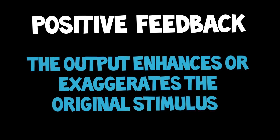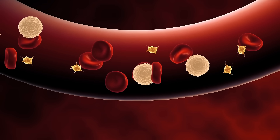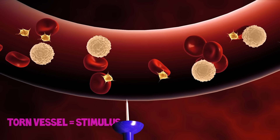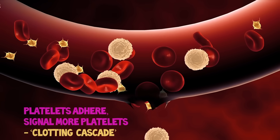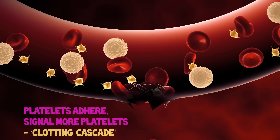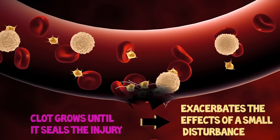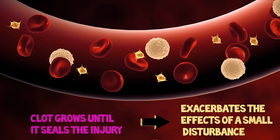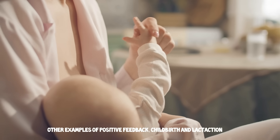We also have positive feedback loops. In these mechanisms, the output will enhance or exaggerate the original stimuli. For blood clotting, the blood vessel receives an injury — this signals the feedback loop. Clotting occurs as platelets adhere to the site and release chemicals, which attract more platelets. The clot grows — this is called the clotting cascade. The feedback ends after the clot seals the injury. Other examples include childbirth and lactation.